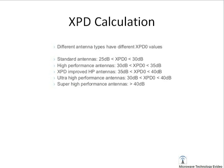In an XPIC link, the XPD value typically ranges from 25 dB to 30 dB, but it depends on the antenna type. For a high performance antenna, the XPD value increases to 30 dB to 35 dB. For a super high performance antenna, the XPD value is approximately 40 dB.